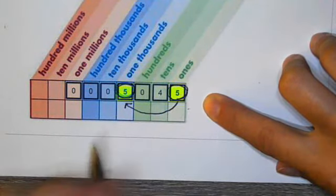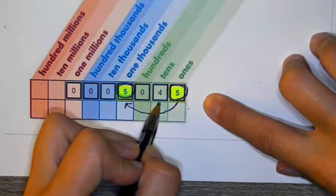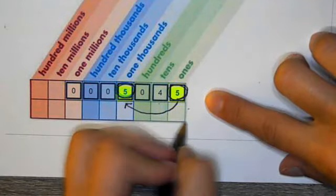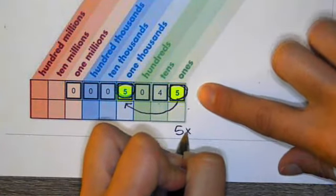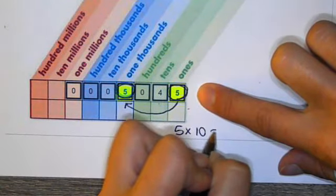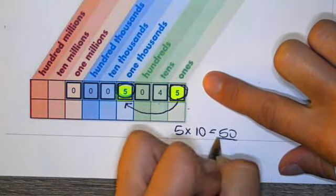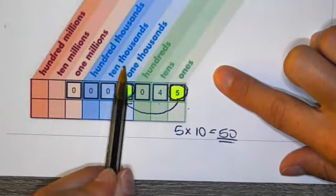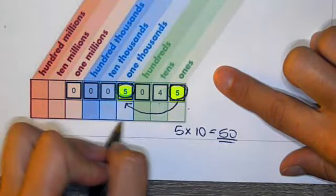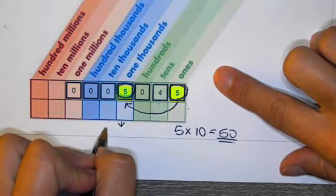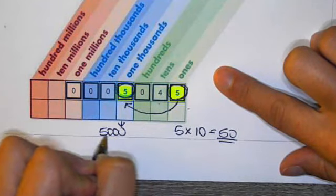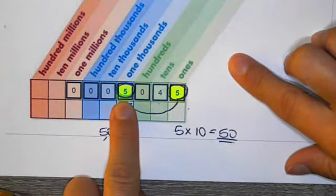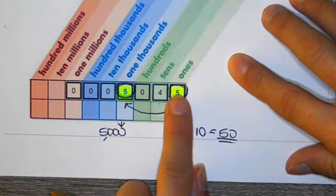Well, let me see. When I make one hop, that is times 10. So I would do five times 10, and that equals 50. This five right here is in the 1000s space. This is 5000. So no, this is not 10 times greater than that.